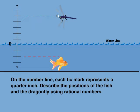Let's start with the dragonfly and find its position. Starting at zero, there are 1, 2, 3, 4, 5 tick marks. Since this position is above the zero mark, the dragonfly is at position five-fourths, as shown here. This is also equivalent to one and one-quarter.